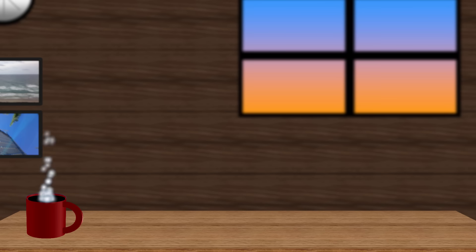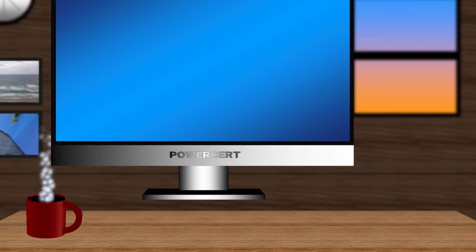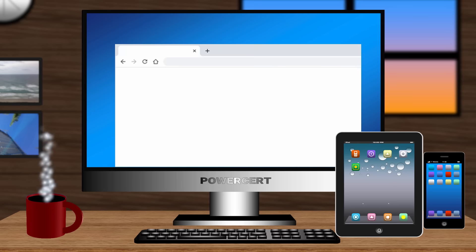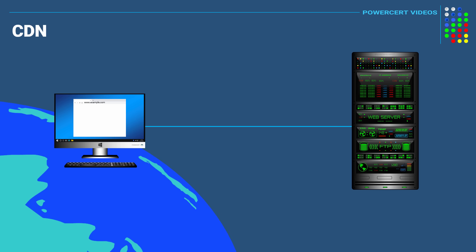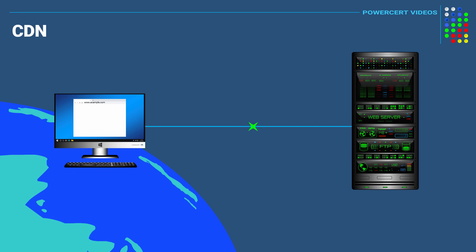Whenever you want to go to a website, you would use your computer, tablet, or smartphone, and then you would type in the address of that website. Your request would travel from your device over the internet to the origin web server, and then the origin web server would send the website data, such as HTML coding, scripts, and images, back to your device and display the web page.